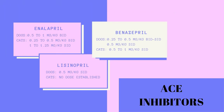Enalapril, benazepril, and lisinopril are members of the angiotensin-converting enzyme inhibitors group. These drugs dilate blood vessels and moderate excess hormone activity that occurs with heart failure, resulting in less resistance in the blood vessels against which the heart must pump. These drugs have improved clinical signs of heart failure and prolonged survival rates in several studies. An ACE inhibitor may be the only drug needed early in the disease process. The specific drug used and the individual pet's condition determines the dose and frequency of administration.